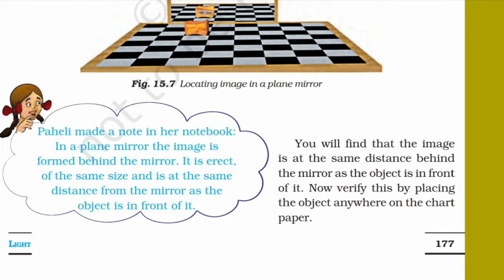The distance between the image and the mirror, and the object and the mirror, are always the same. The distance between the image and the mirror equals the distance between the object and the mirror.